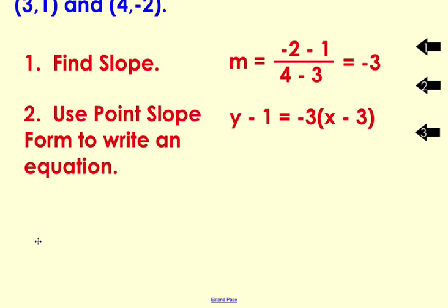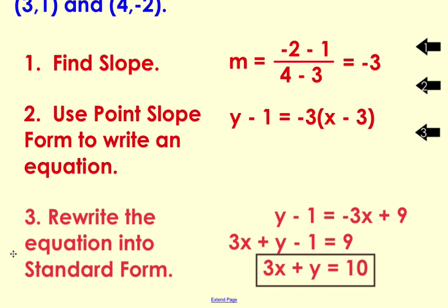Now since the instruction said we needed to write the equation in standard form, we cannot stop here. We must continue to distribute the negative three to the x as well as to this negative three. And when you distribute correctly, the right side becomes negative three x plus nine.